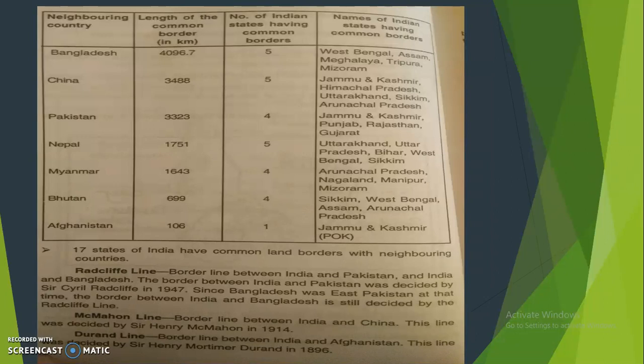There are some important boundary lines: the Radcliffe Line is between India and Pakistan; the McMahon Line is between India and China; and the Durand Line is between Afghanistan and Pakistan. These are important lines related to India's borders.